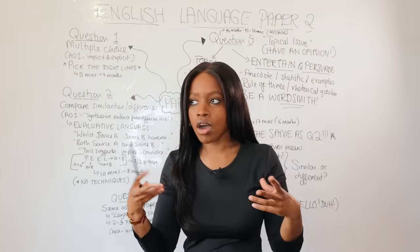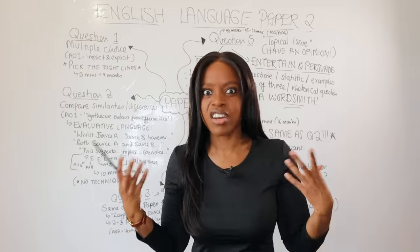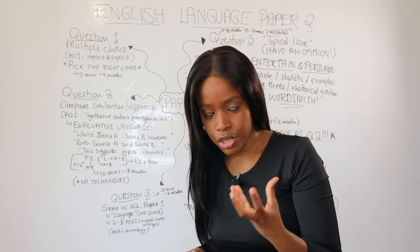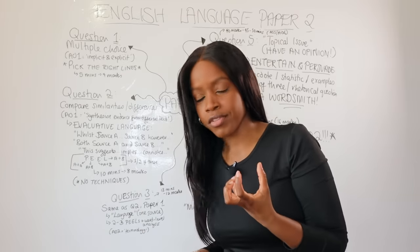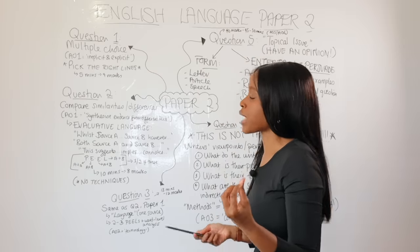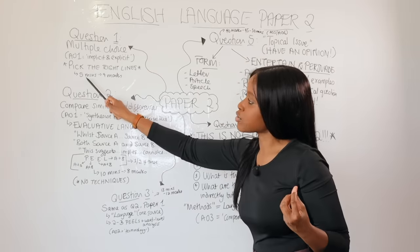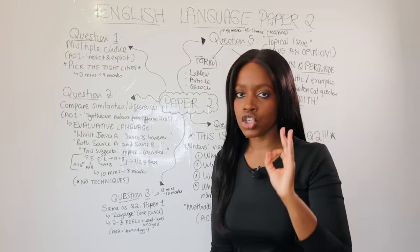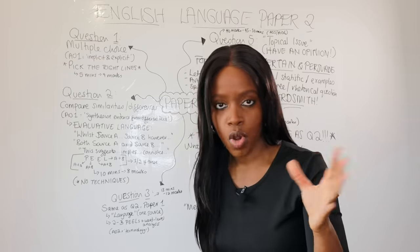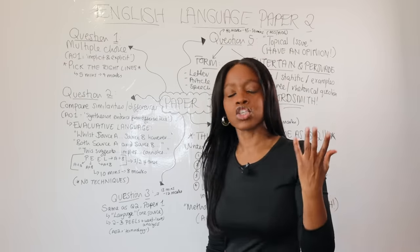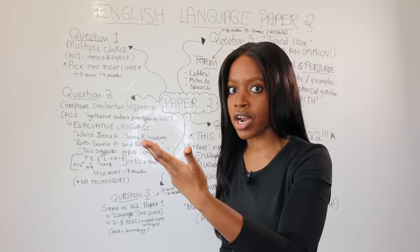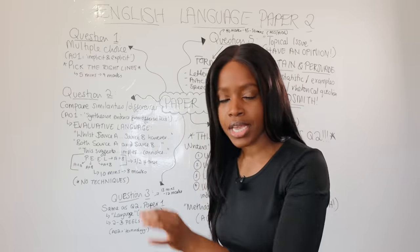This question tests your AO1 — your ability to interpret explicit and implicit information. In other words, are you able to understand what the question is asking and pick out the relevant information from the source? Don't stress out. Spend a maximum of five minutes on this question as it's worth just four marks.